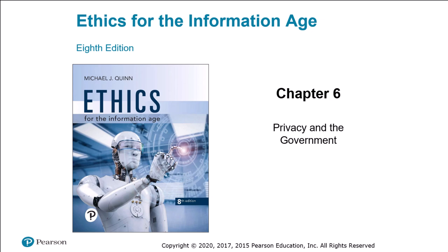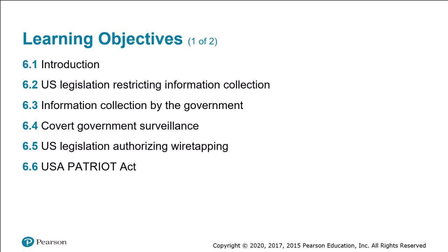In this lecture series we're going to explore chapter six, which is titled Privacy and the Government, from Ethics for the Information Age, the eighth edition by Michael Quinn, which is the primary and required text in this course. The learning objectives we're going to get through in this lecture are sections 6.1, 6.2, and 6.3.